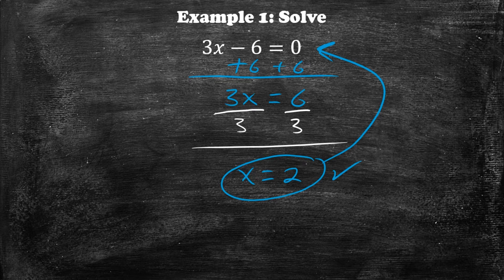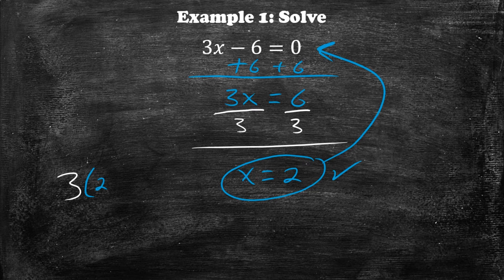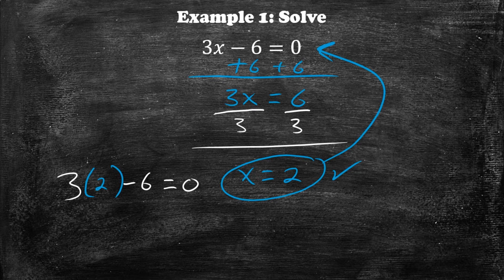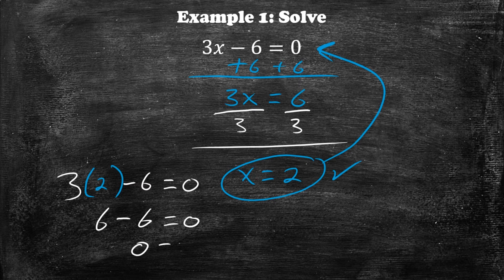Let's go ahead and do that to confirm we have the right answer. We'll have 3 times 2 — which is the x that we found — minus 6 is equal to 0. So 3 times 2 is 6, and then minus 6 is equal to 0. 0 is equal to 0. Therefore, we know that we got the right answer.